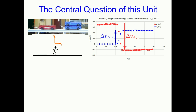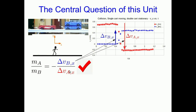This whole unit is really formed around a single central question, and it'll take us the whole unit to answer it. Let's think about this person and their set of axes, which they're using to make measurements on a cart collision — a 2-to-1 inertia ratio. This person sees that the delta-V of one cart is half the size of the other, and concludes that the ratio of inertias is equal to the negative of the inverse ratio of the delta-V's.